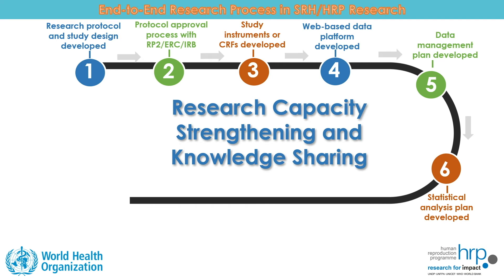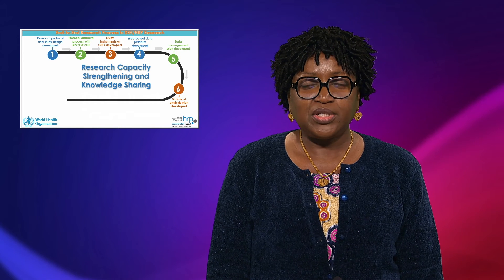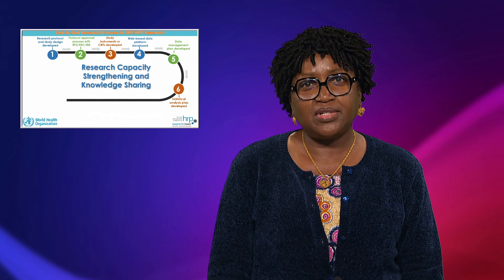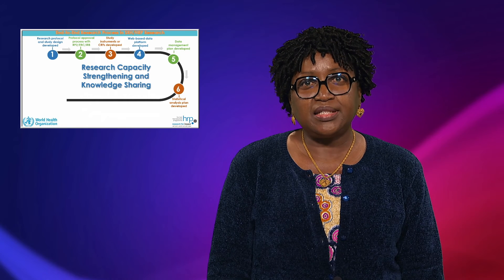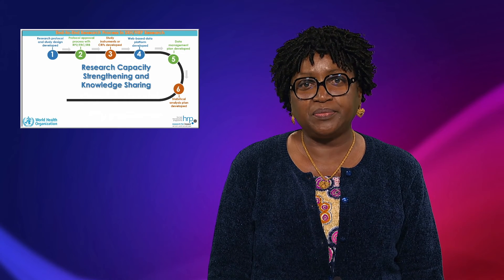The sixth stage is developing the statistical analysis plan or SAP. The SAP is a document that gives detailed descriptions of the planned statistical analysis to be carried out. This ensures that the evaluation of a research study objective is conducted in a scientifically valid and transparent way.